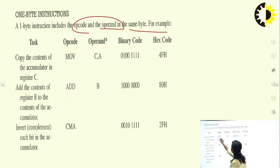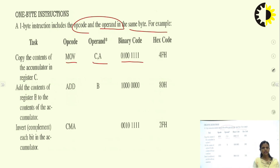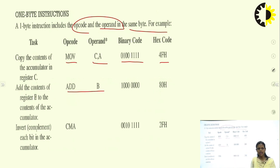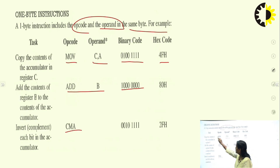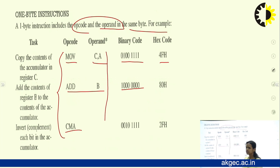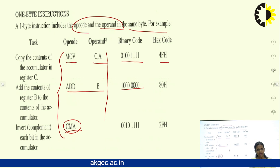Examples of one-byte instructions are MOV C, A and ADD B. You can see that the binary code for these instructions is only 8 bits. One-byte instructions use only one memory location. If you see that only registers or instructions with implied addressing mode are used, such instructions come under one-byte instructions.